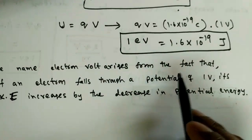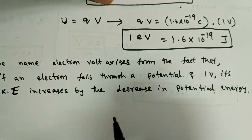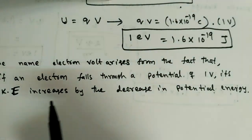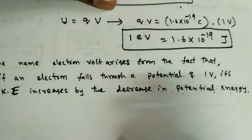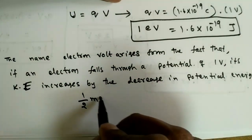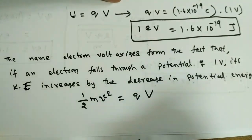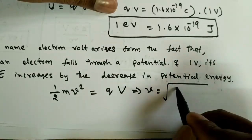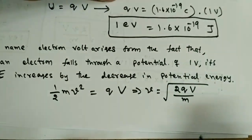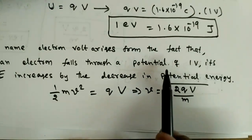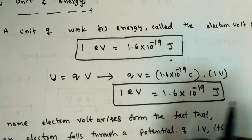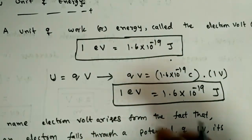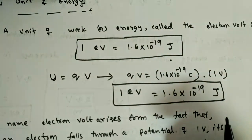The name electron volt comes from the fact that if an electron falls through a potential of 1 volt, its kinetic energy increases by that amount. From ½mv² = Q × V, we can find the speed of the electron: v = √(2QV/m). This is one important relation. These are the basic parameters of the Electronic Devices course — remember all parameters, units, and conversions. In the next lecture, we will start with energy bands in solids.